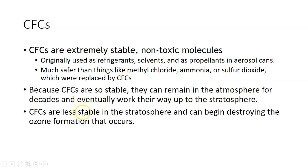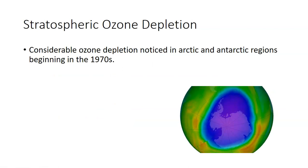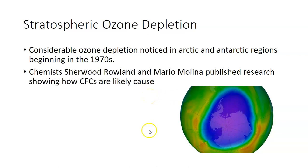And CFCs are less stable in the stratosphere and can begin destroying the ozone formation that would normally occur. So in the early 1970s, when we started using satellites to measure things, we began noticing that in both the Arctic and Antarctic regions, there was considerable depletion in the amount of ozone in the atmosphere. And of course this is concerning. And it already began to do damage to some of the fragile ecosystems in those areas. Two chemists, Sherwood Rowland and Mario Molina, began to notice that CFCs might be the cause. And they published research showing that the CFCs that have made their way up into the stratosphere were in fact the likely cause.